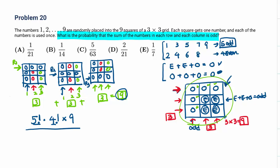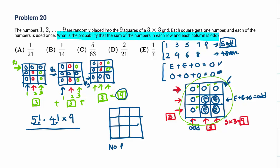For the denominator — the probability — there is no restriction: any of the 9 numbers can be placed anywhere. So the total number of arrangements is 9 factorial.